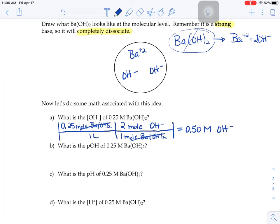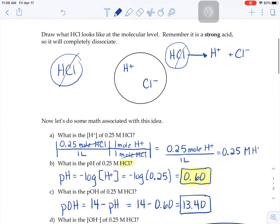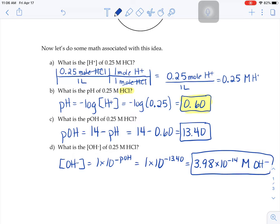So I use the same numbers intentionally. If you scroll back here, this was 0.25 molar hydrochloric acid. And in this example, the molarity of the solution matched the molarity of the ion.